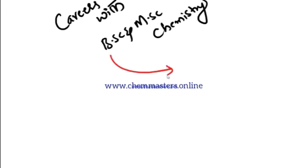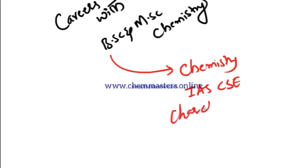With BSc chemistry as a basic qualification, one can choose chemistry as an optional subject in IAS CSE examination, civil services examination. I am going to give one successful example: Chachit Gaud. Chachit Gaud cleared IAS CSE 2015 examination. Whenever we look at his optional subjects, one of his optional subjects is chemistry.